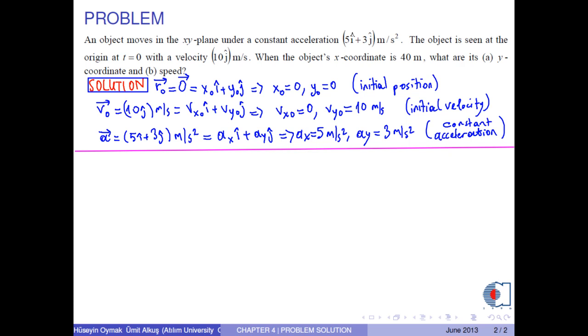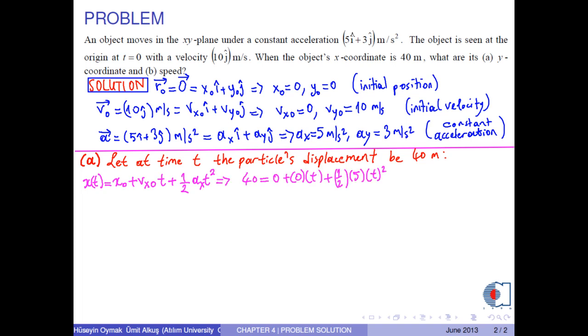To solve part A, let at time t the particle's displacement be 40 meters. Remember that the x-component of the position vector is found by this formula. Now we can put the corresponding numerical values into this equation. So we obtain 5 over 2 t squared. If we solve, we obtain t equals 4 seconds.